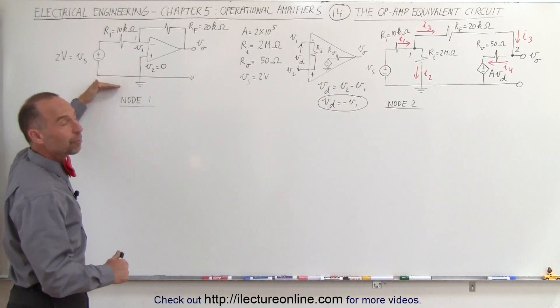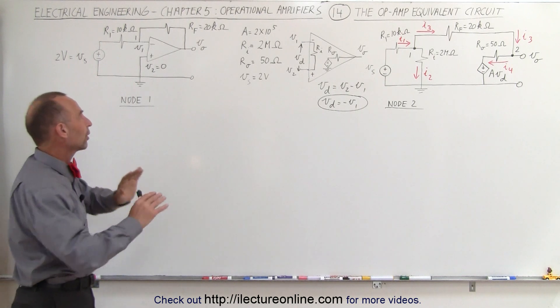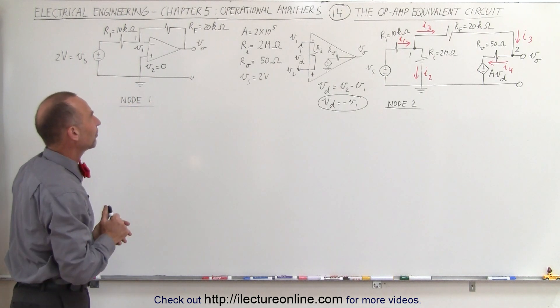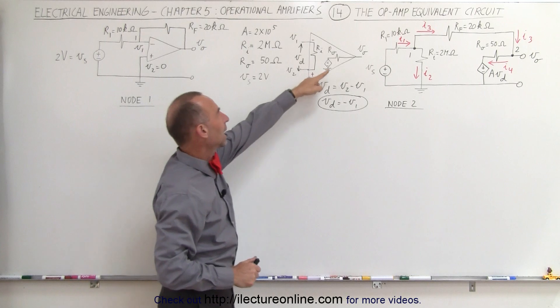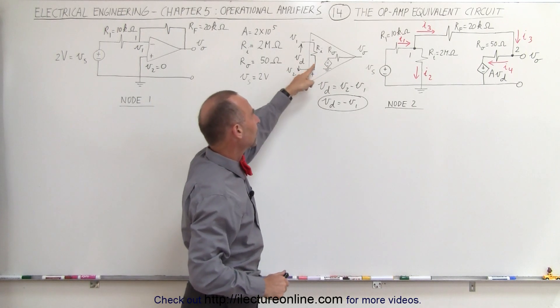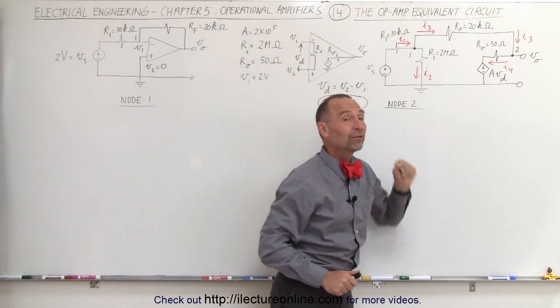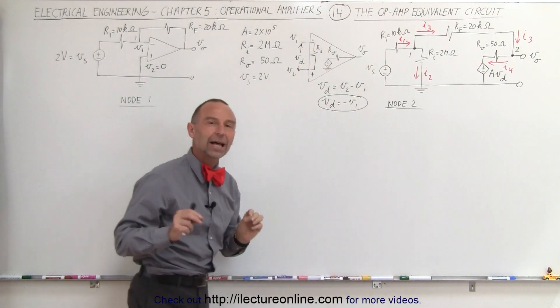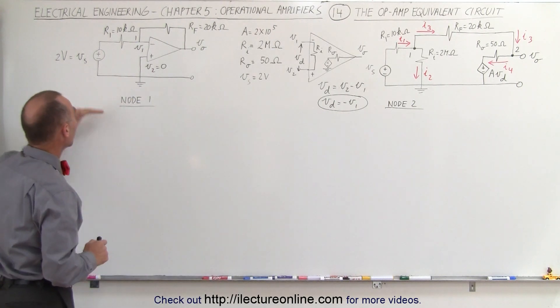This is what we call an ideal operational amplifier. We're ignoring what happens internally to the amplifier. Here we're going to take what happens internal to the amplifier, put it into the equivalent circuit, and try to calculate the output voltage in both cases.